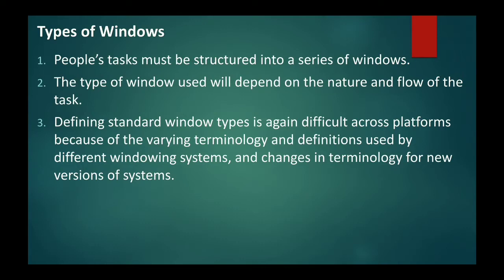Now we come to the types of windows. The types of windows depend on the situation and the task being performed. If we go to Microsoft Excel, Word, or PowerPoint and click on Format or the Paragraph option, a window will open. The main application window is the primary window, and the paragraph window that opens automatically is the secondary window. So basically we have two types of windows: primary and secondary.